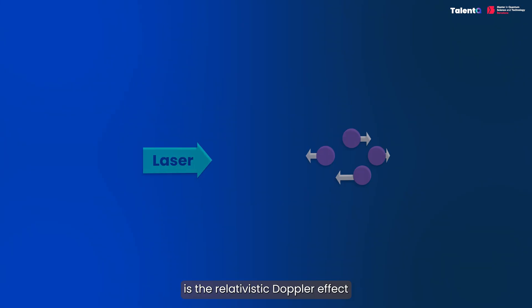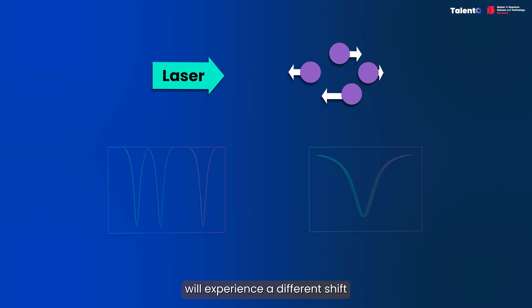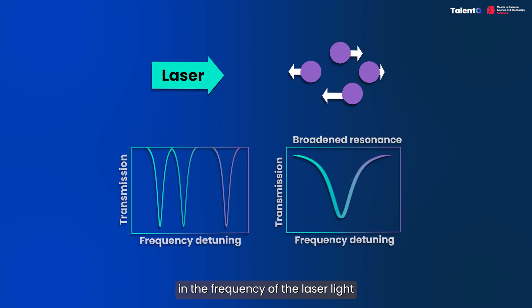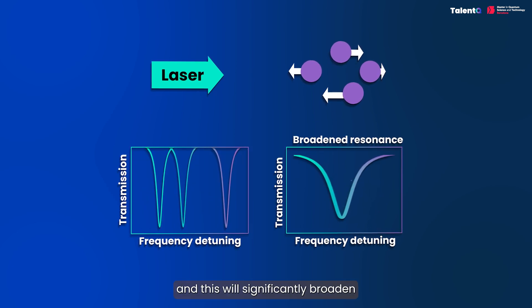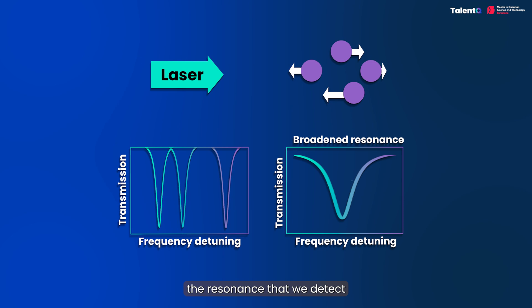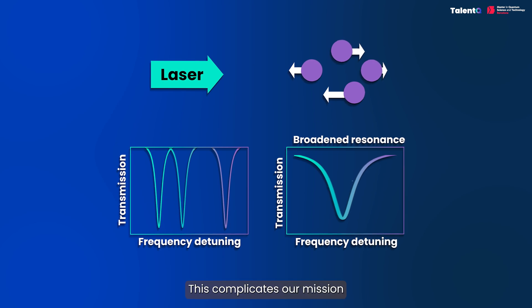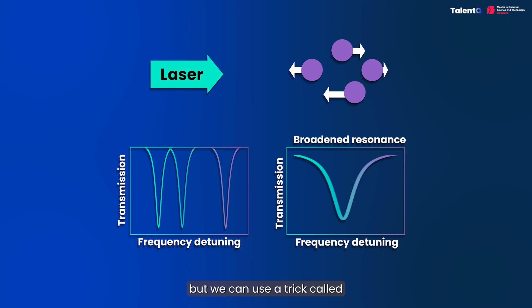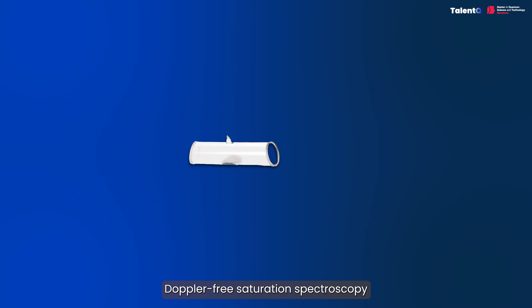The answer is the relativistic Doppler effect. The finite speed of the atoms in the cell, which at room temperature can be quite large, means that some atoms will move towards the beam and others away from the beam. As a consequence, each atom will experience a different shift in the frequency of the laser light due to the Doppler effect, and this will significantly broaden the resonance that we detect. This complicates our mission of finding the transition precisely, but we can use a trick called Doppler-free saturation spectroscopy.